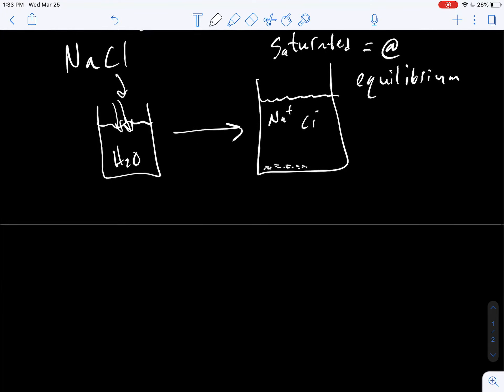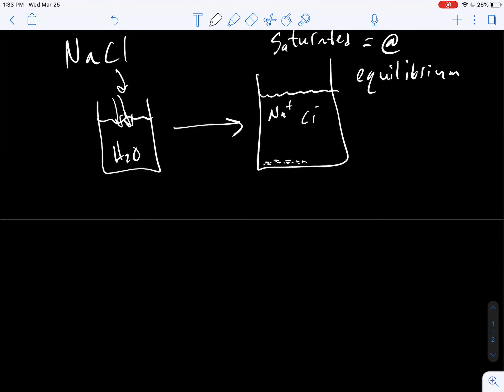And we can define this as, we can write out our equilibrium expression for what's happening. NaCl solid is in equilibrium with sodium plus dissolved now, and Cl minus dissolved. And you can imagine the Ksp value for this is going to be quite large. There is a lot of sodium, a lot of chlorine dissolved in a saturated solution of sodium chloride. So very, very large value.